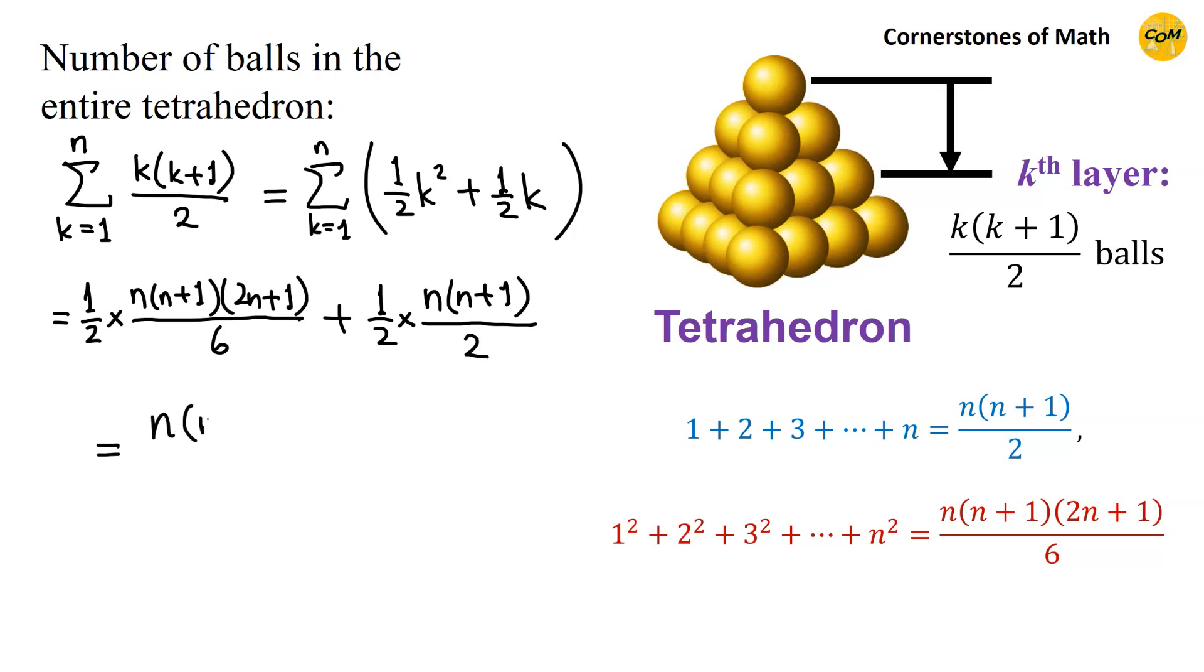which simplifies to n, n plus 1, n plus 2, divided by 6. So this is the total number of balls in a tetrahedron.